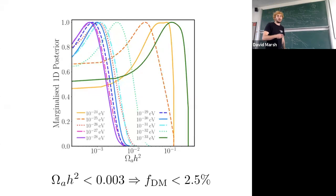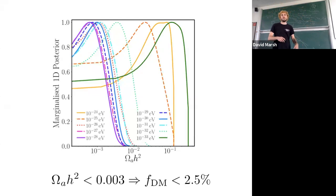To the extent where you could detect a percent-level departure from Lambda CDM at more than five sigma confidence with upcoming CMB experiments. I'll show that in a few slides.